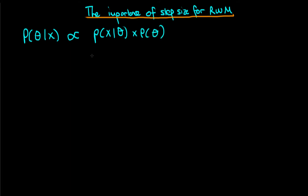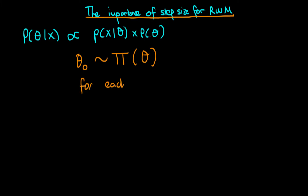The algorithm for sampling from the posterior goes something like this. The random walk metropolis algorithm starts off by sampling a value of theta zero from some proposal distribution, which in general is some arbitrary distribution. Then for each iteration t, we generate a proposed value theta t primed by sampling it from some jumping kernel.